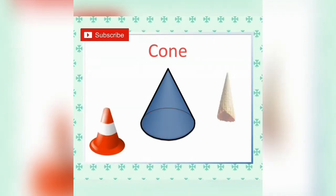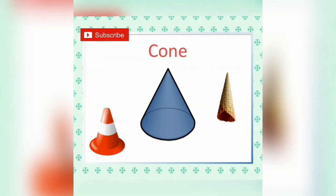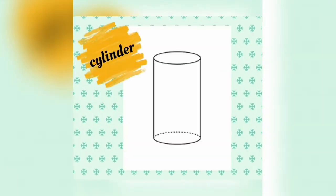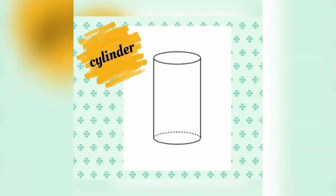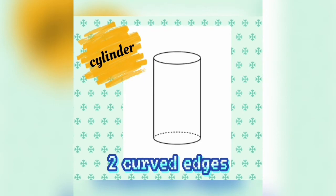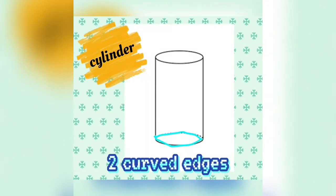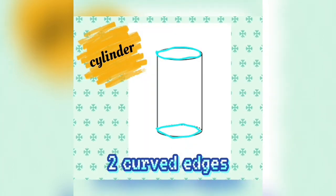Examples of cone objects: Traffic Cone and Ice Cream Cone. Next: Cylinder. It has two curved edges — one, two.